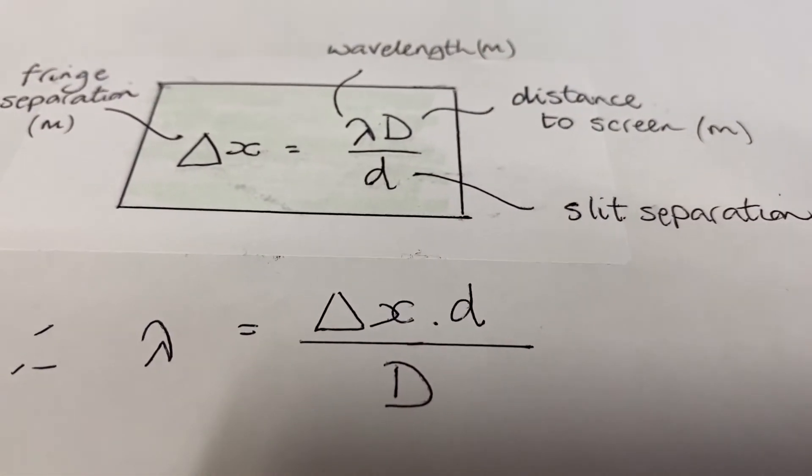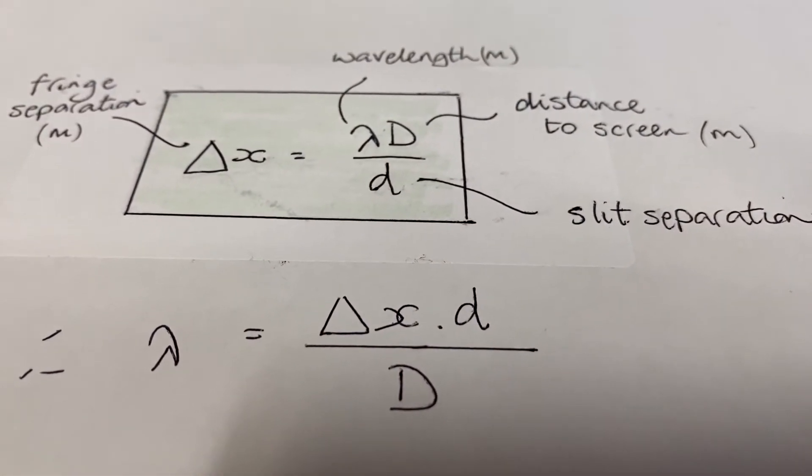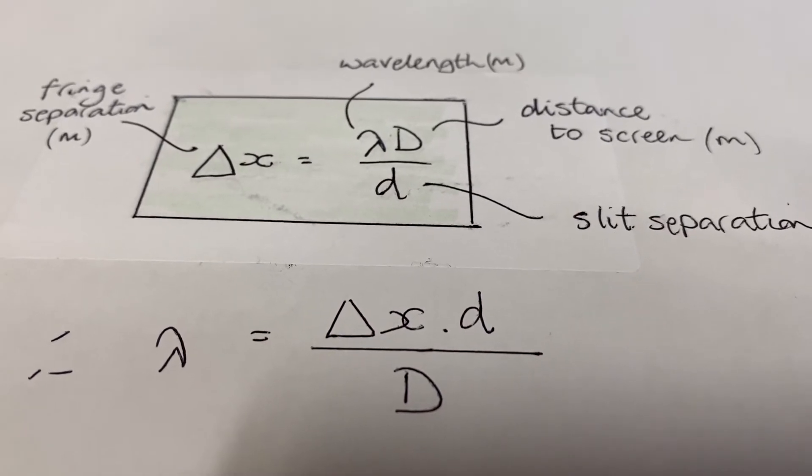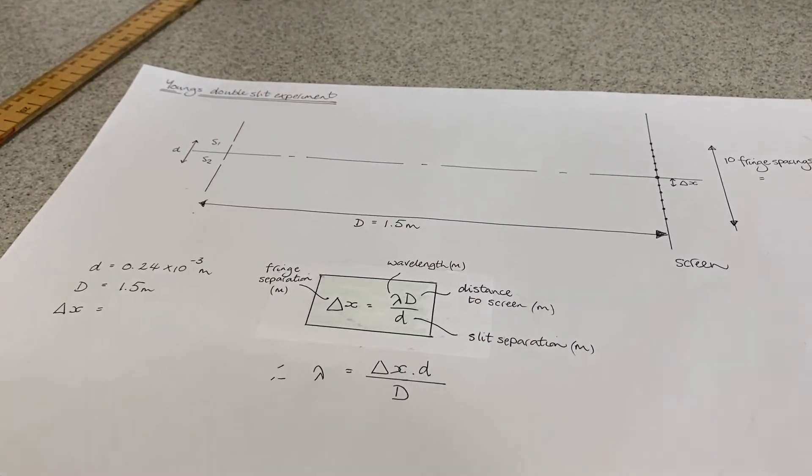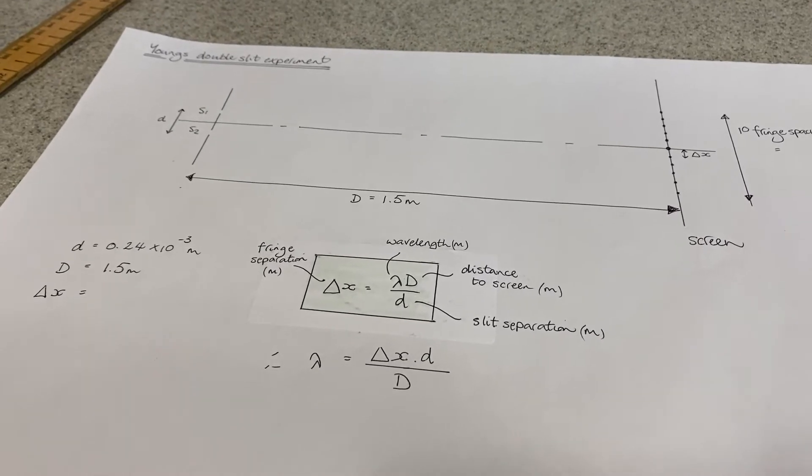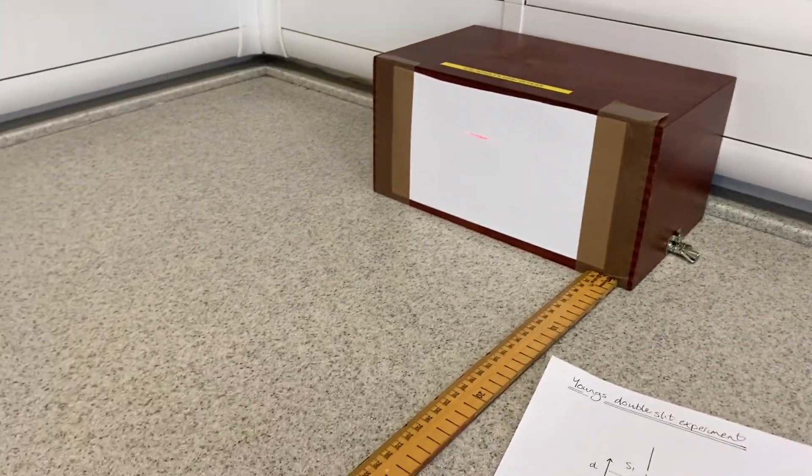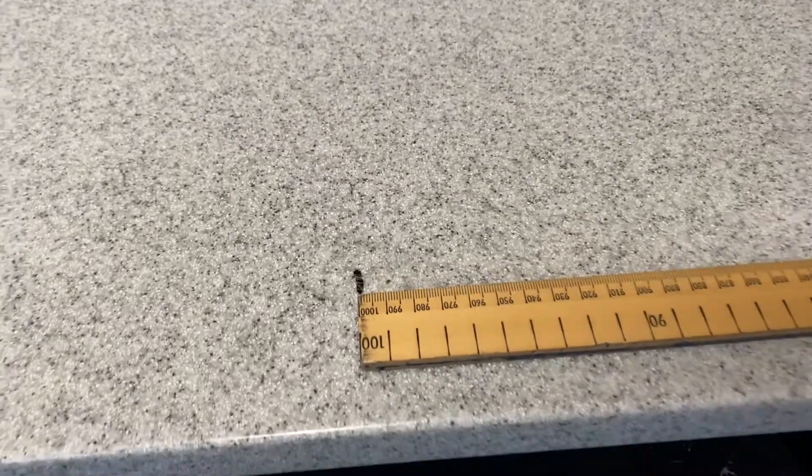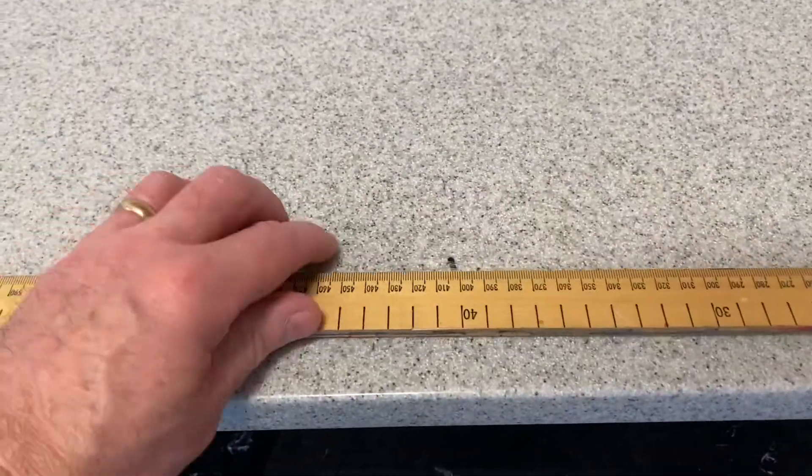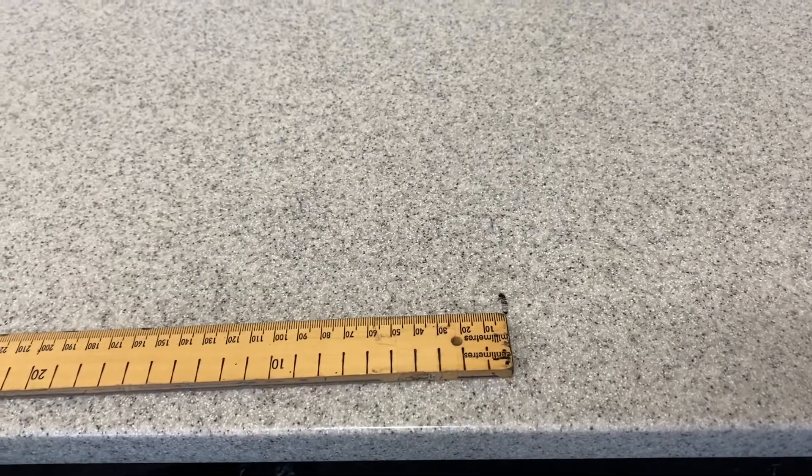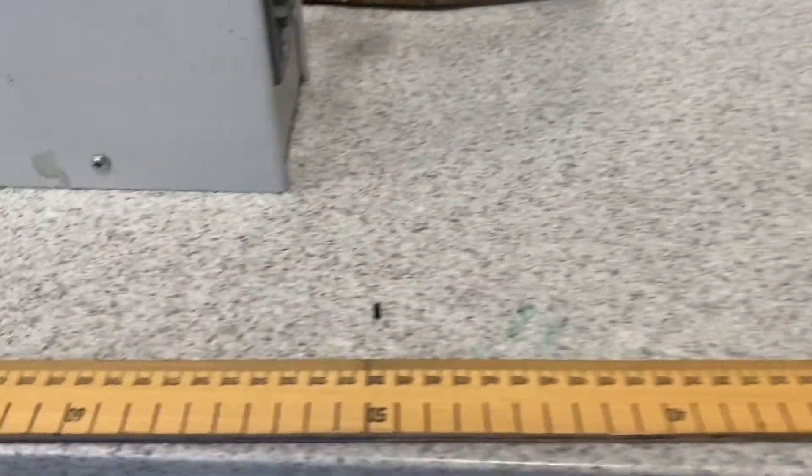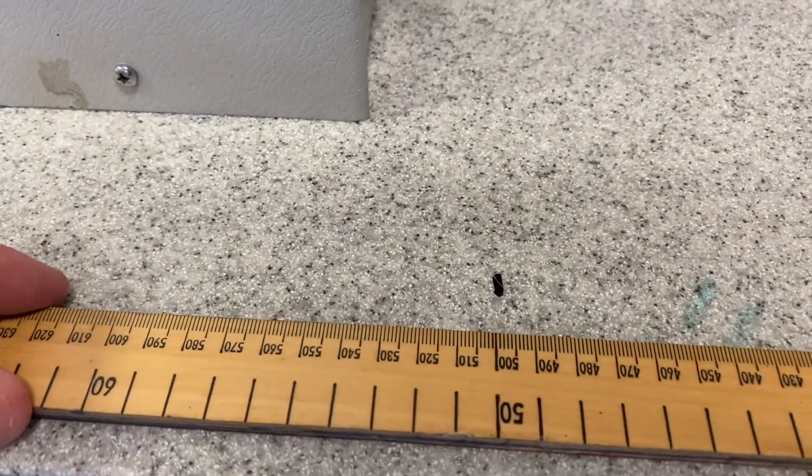And big D is the distance to the screen. Now we can measure all of them. We're going to measure them and put them into that relationship and see what we get for the wavelength of our laser. The first thing we're going to measure is the distance to the screen from the slit. I've got a meter stick there. Let's make that distance to the screen 1.5 meters.